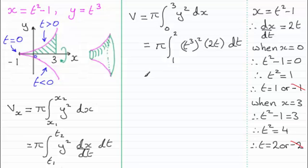Now, all I need to do is work out this integral. So I've got the constant 2 times the pi there. I can bring those constants out the front. I've got the integral then of t to the power 6 times another t, so that's t to the power 7. And that's integrated with respect to t between the limits t equals 1 and t equals 2.